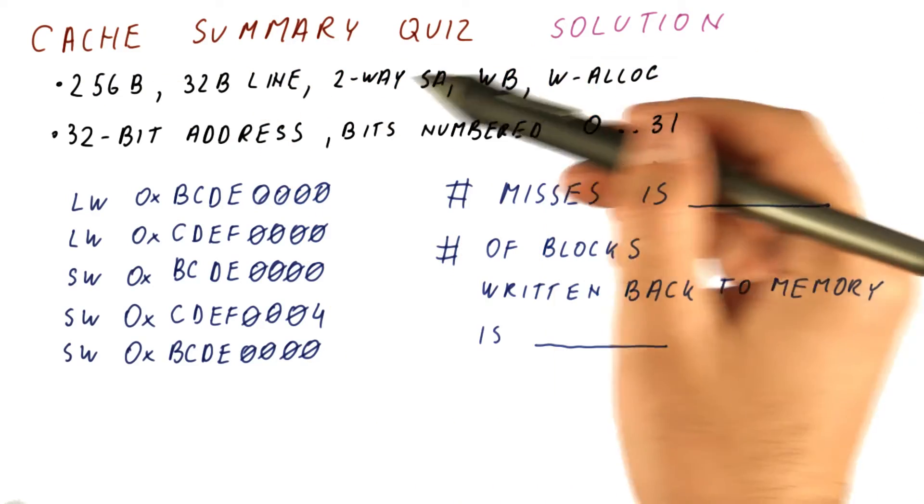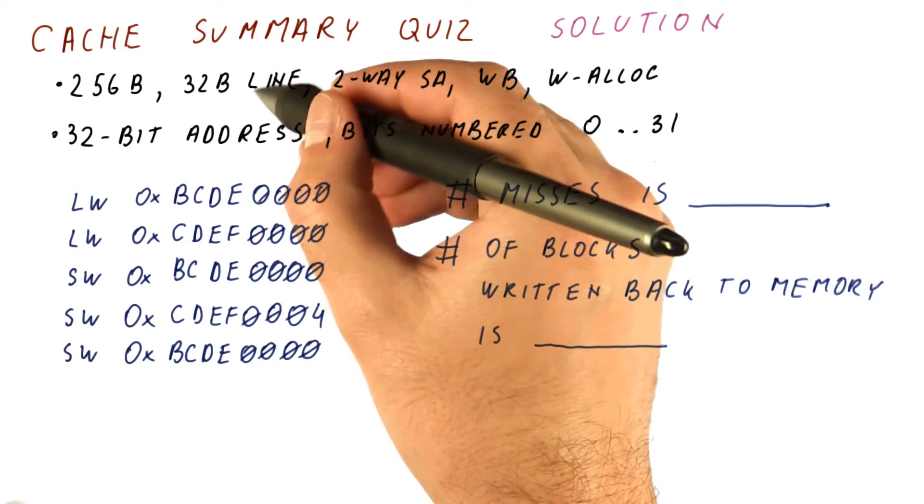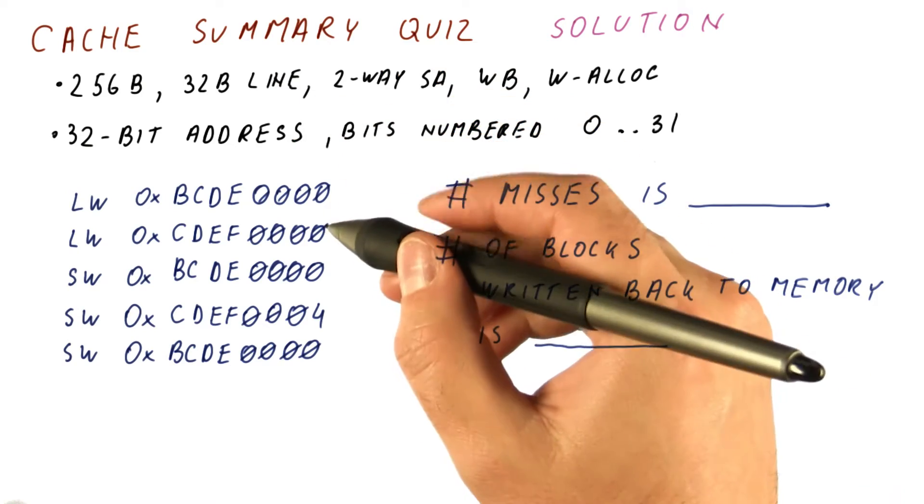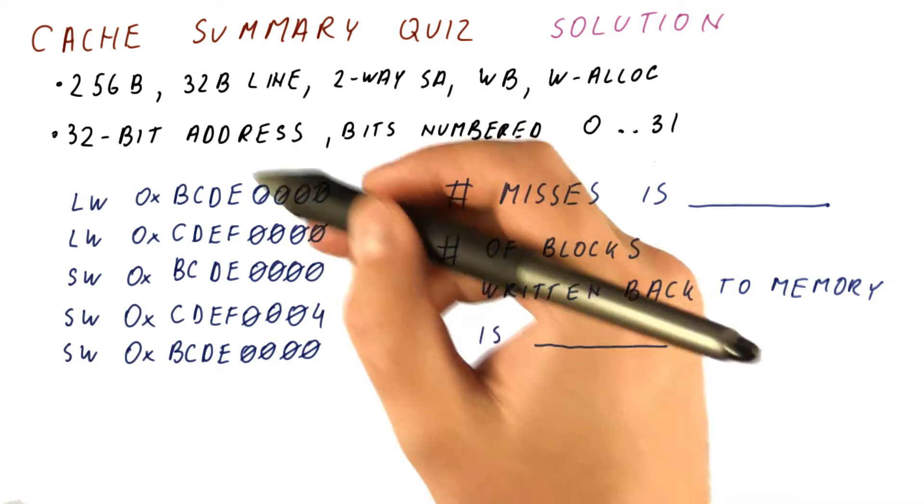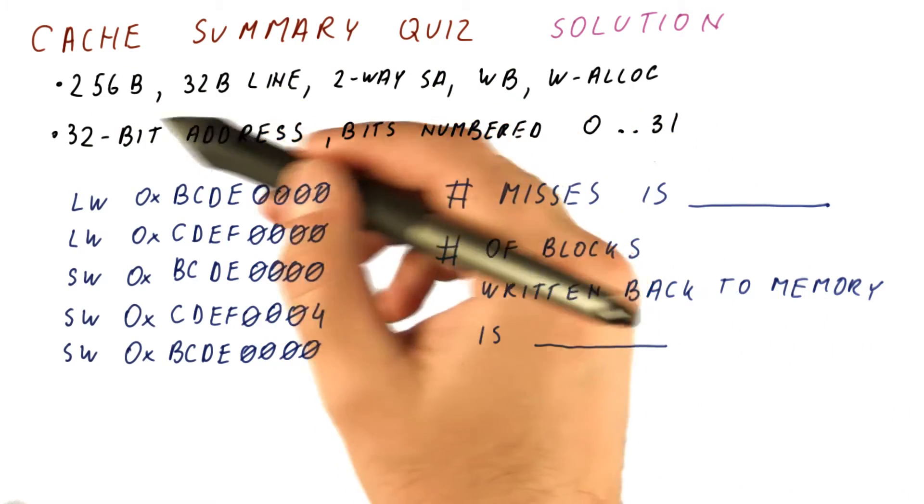Let's look at the solution to our cache summary quiz. We already know that the least significant five bits are the offset bits, that there are eight blocks in this cache.